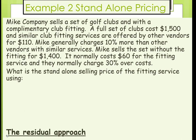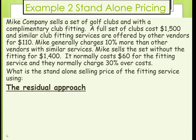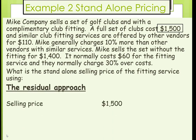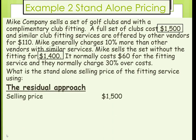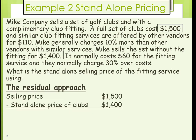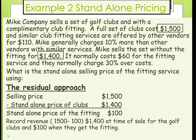Our last approach is the residual approach — the easiest of the three. We know a full set costs $1,500 and the golf clubs alone cost $1,400. We subtract the two, and that tells us the standalone price for the fitting is $100. So we assign $1,400 at the time of the sale for the golf clubs and $100 when the customer receives the fitting. And that concludes this part.